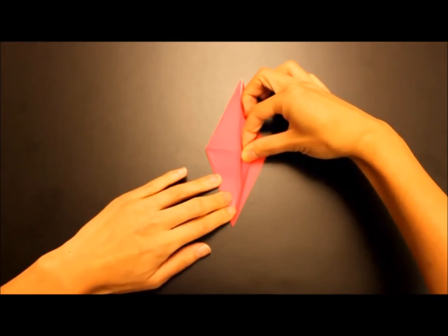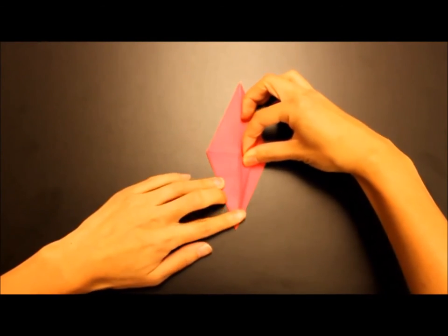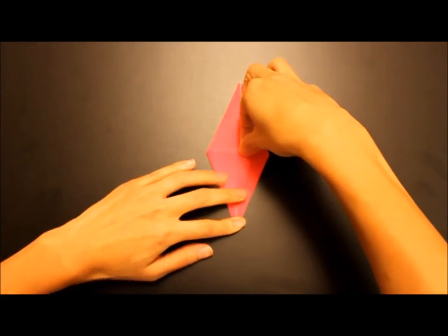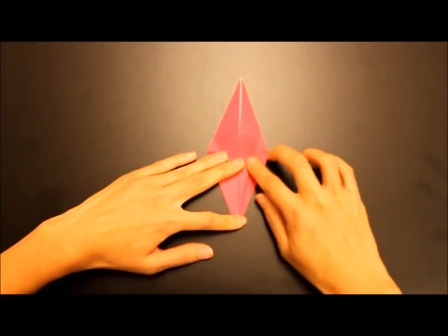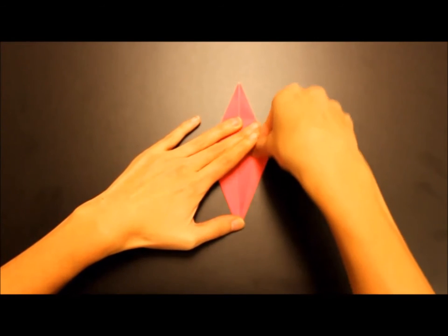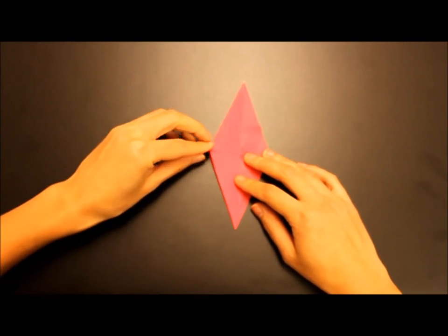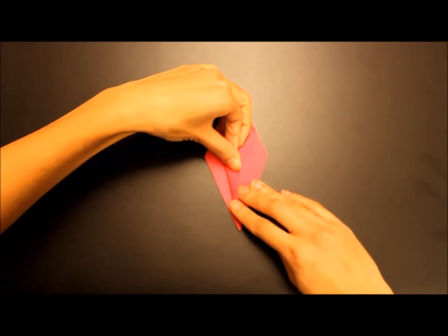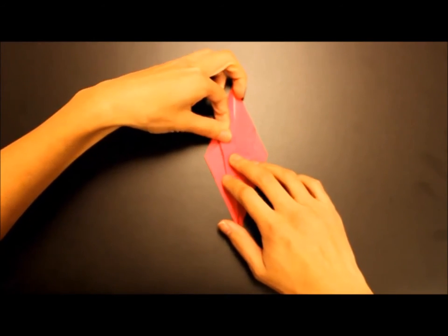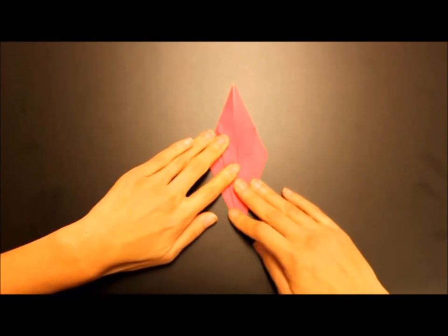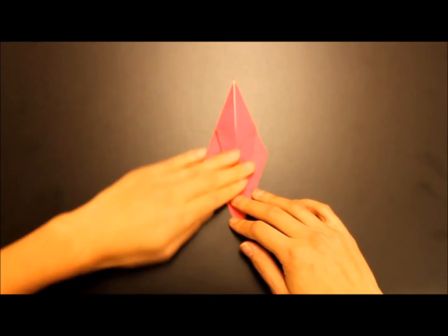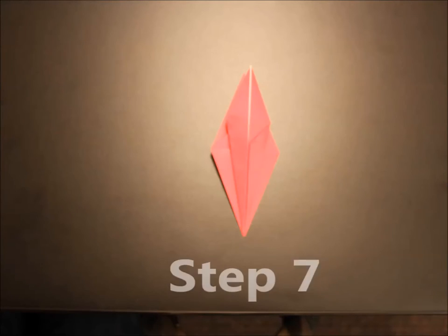Fold the outer edges to the middle. Make sure the flappy side is down. Yes, the flappy side. Make sure it's down. And crease and go ahead and do the same thing to the other side and crease again. Step seven.